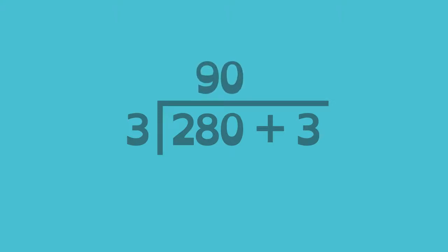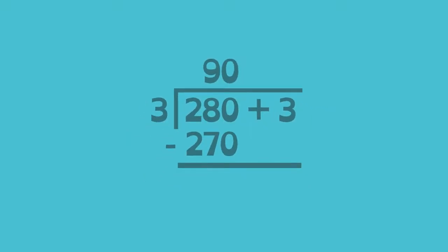3 times 90 is 270. Subtract, and the difference is 10. The 3 ones combine with the 10, making the remainder 13 ones.